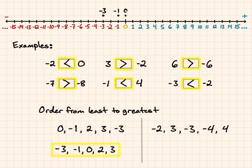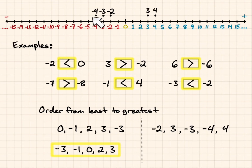For our next set of integers to order, we'll put negative 2, 3, negative 3, negative 4, and positive 4 on the number line. We're going to order them from left to right, least to greatest: negative 4, negative 3, negative 2, 3, and 4.